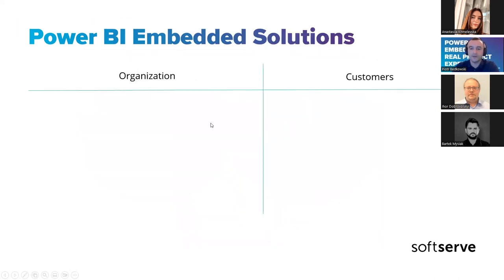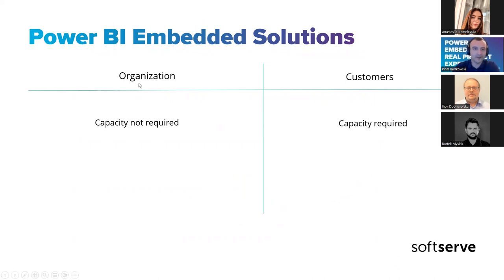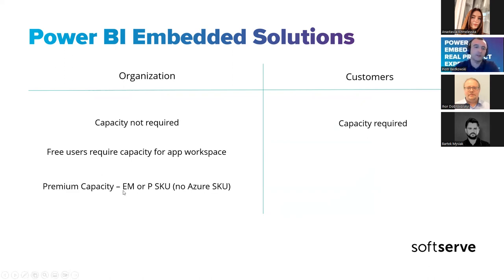There is also a difference with capacity. For organization, capacity is not required if users have a Pro license. For customers, capacity is always required. One caveat: for organization, if you have free users they will require capacity for the app workspace. For organization the SKUs you can use are premium capacity — only EM and P SKUs, no Azure A SKUs. For customers you can use Azure SKUs, or if you want you can also use the Office SKUs, however Azure is recommended as it's easier to track your costs.